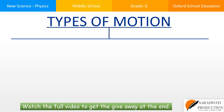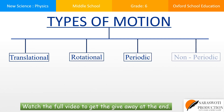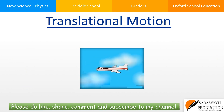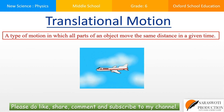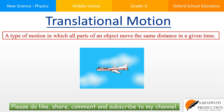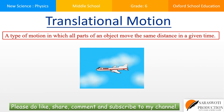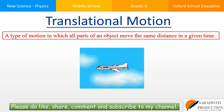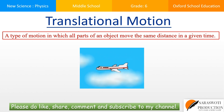Types of motion. There are different types of motion: translational motion, rotational motion, periodic and non-periodic motion. First comes translational motion. A type of motion in which all parts of an object move the same distance in a given time is called translational motion.